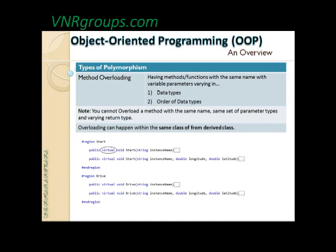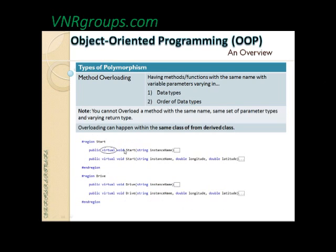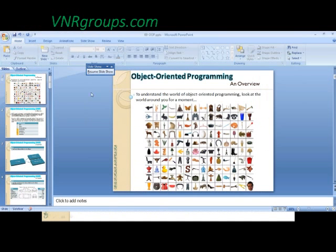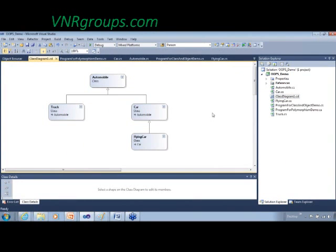Another key thing being introduced now is a keyword called 'virtual.' We'll see what this virtual keyword means. Also, a key point in overloading: overloading can happen within the same class or from a derived class. We haven't talked about what a derived class is yet, so we'll quickly see what that means. I'm going back to the diagram.